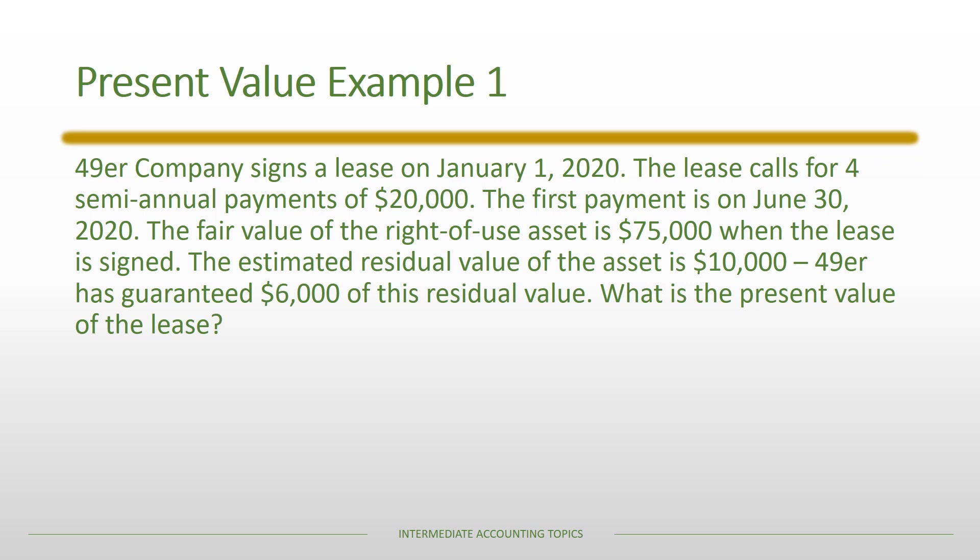With this example, you read the information and go through the two steps to get the present value. We have a lease signed on January 1st, 2020, with four semi-annual payments and a first payment due June 30th. When you see June 30th on a lease signed on January 1st, you know payments happen at the end of each period. We're also given the fair value of the asset and some residual information.